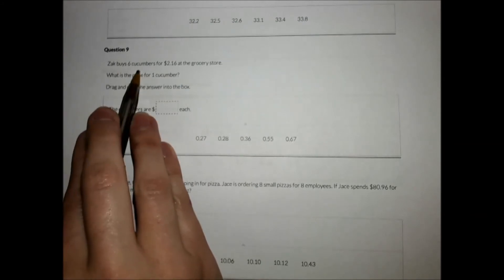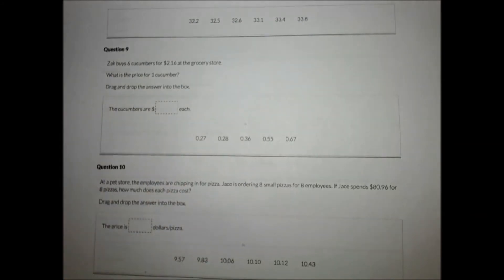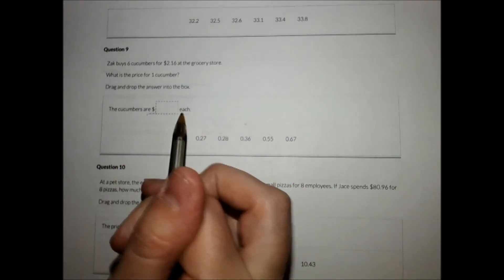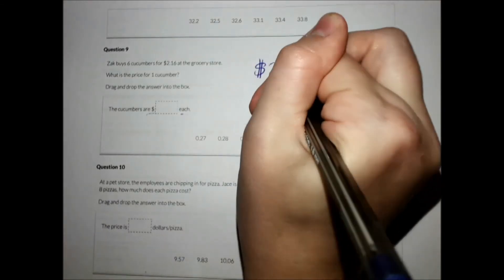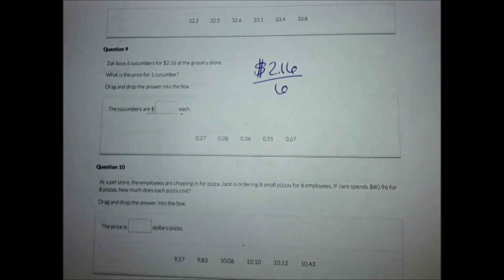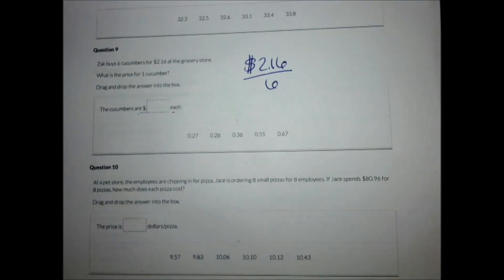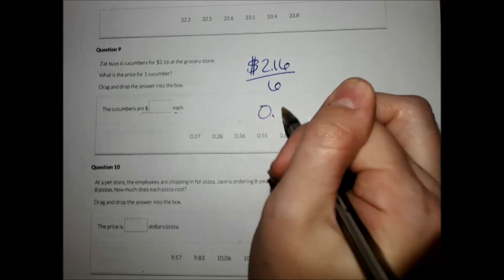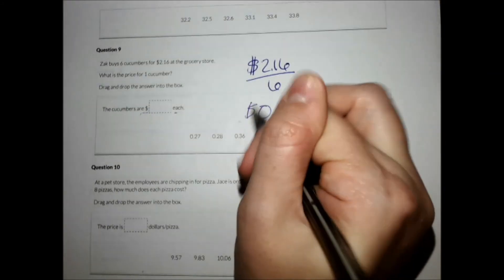This one, Zach buys six cucumbers for $2.16 at the supermarket. At the grocery store, not supermarket. What is the price for one cucumber? So we want the price for each. The price goes on top over the number of cucumbers. So all I'm going to do is divide 216 by 6, and I get 36 cents each.